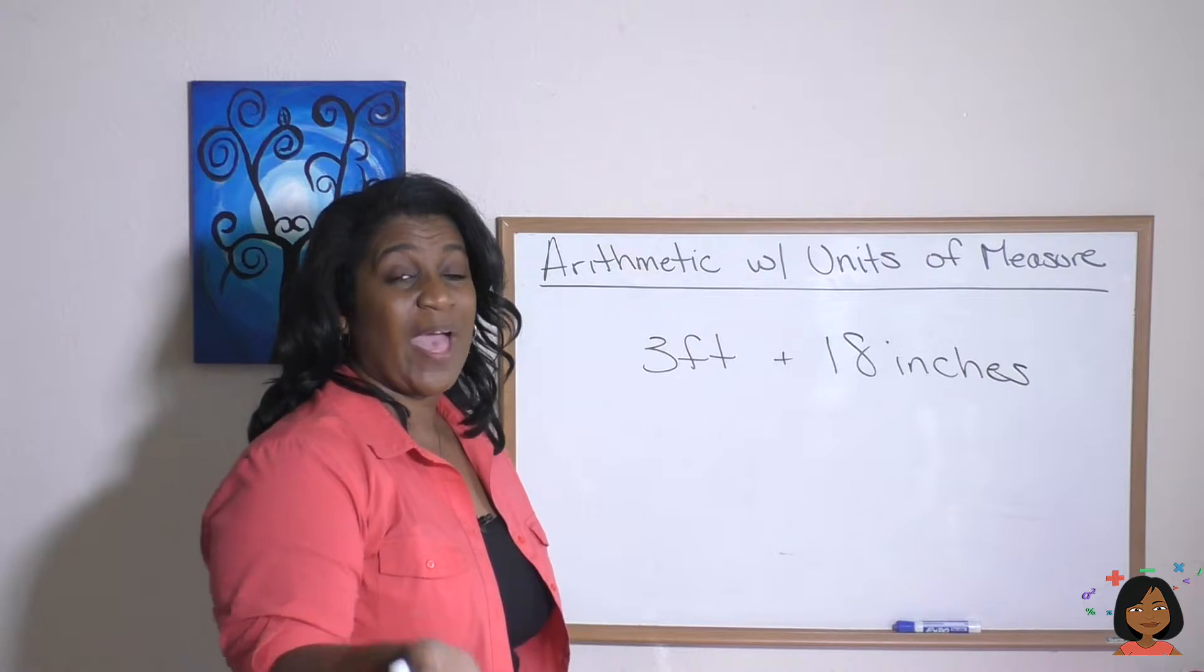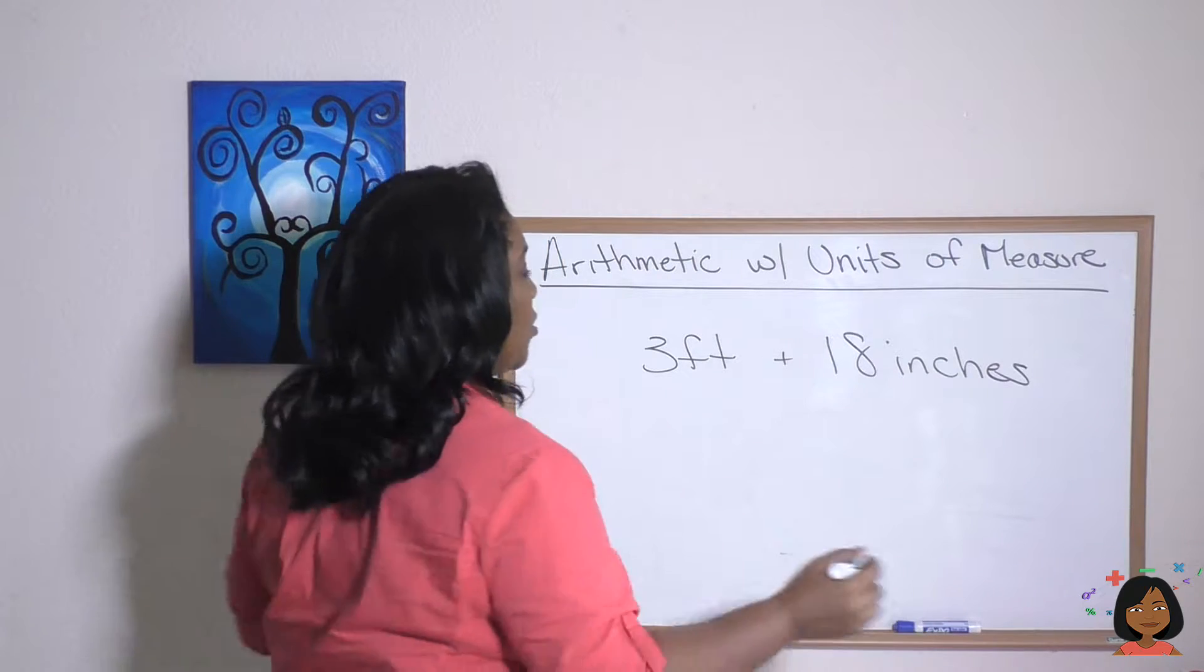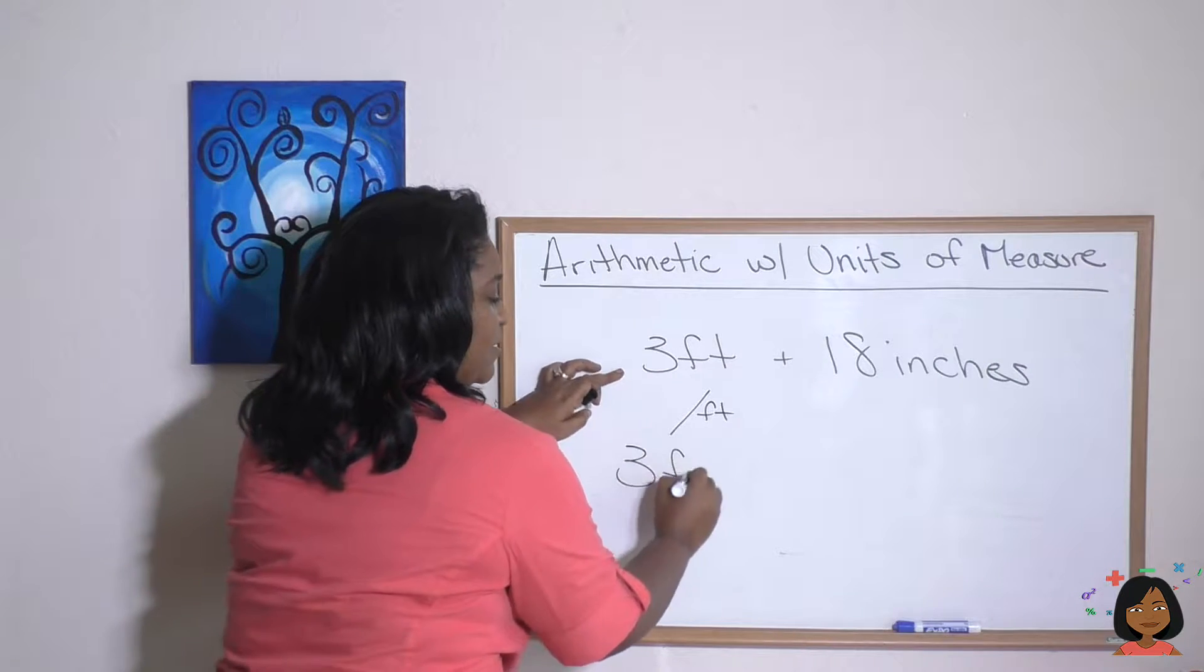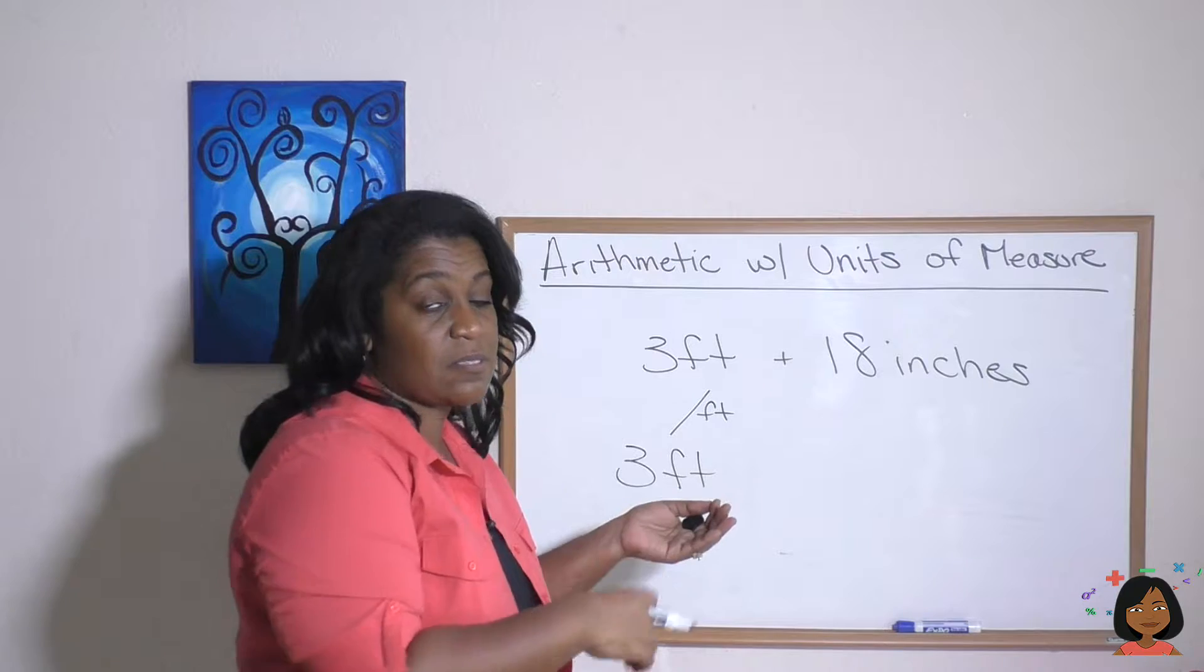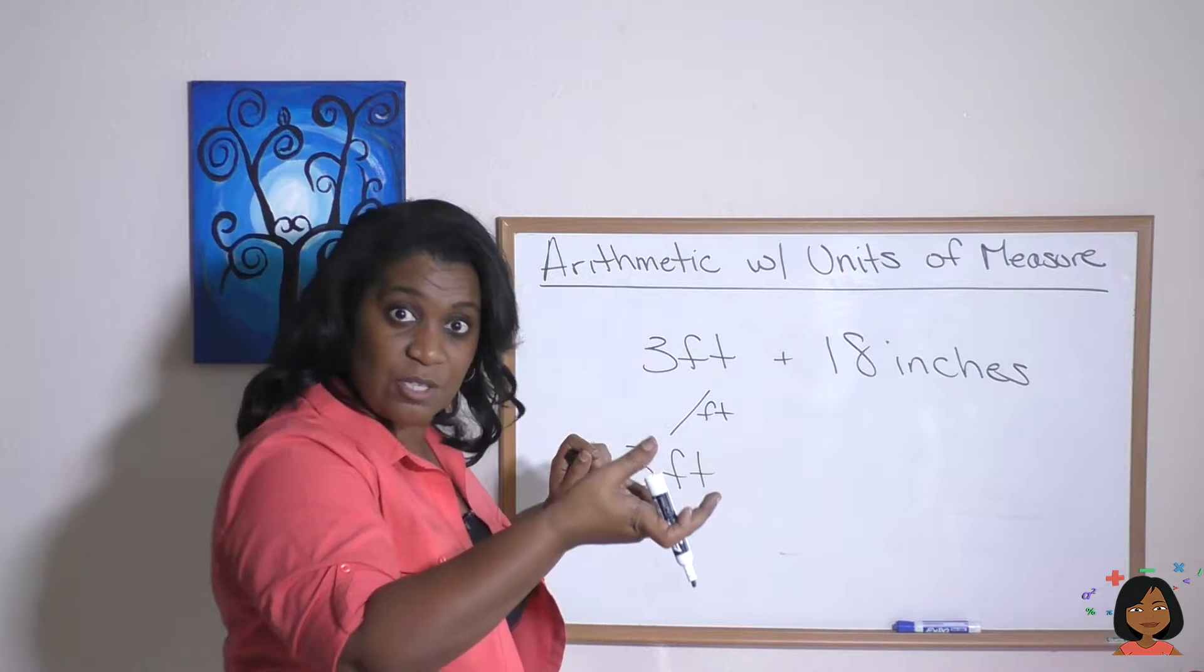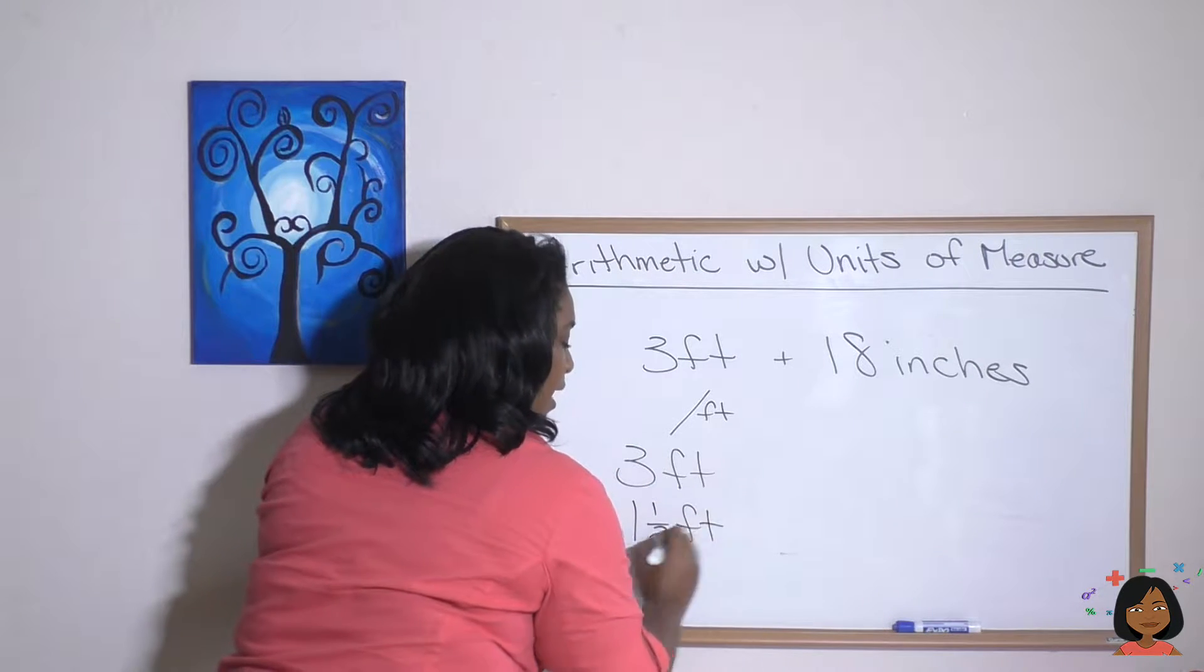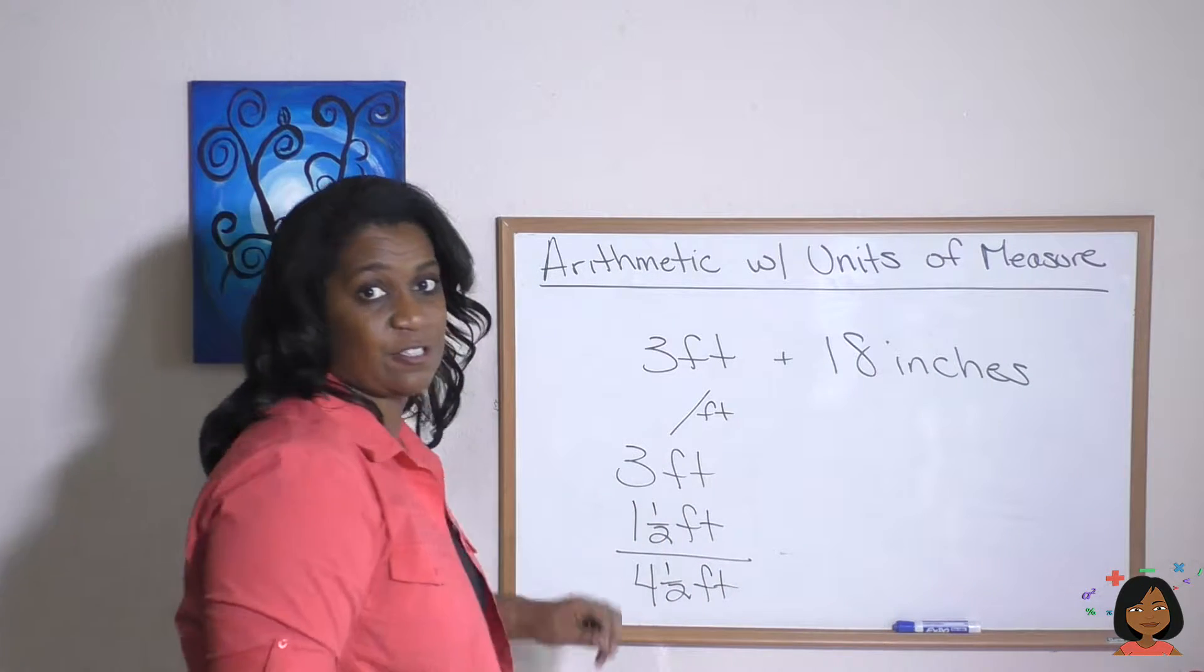Now, what if you had three feet plus 18 inches? There's still two ways to do it. We can convert everything to feet. So let's do that. Three feet remains the same, but 18 inches. Well, we know 12 inches is one foot. So 18 inches is an additional six inches. That's one and a half feet. So we could actually use a fraction here. One and a half feet. And then we add, we're at four and a half feet for our answer.